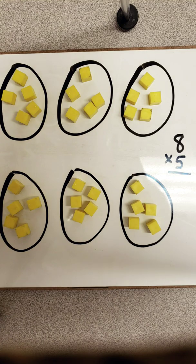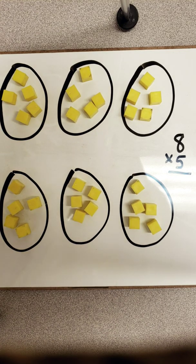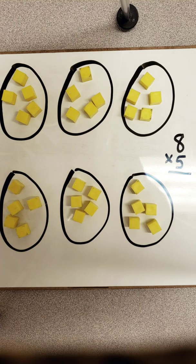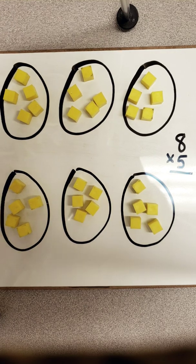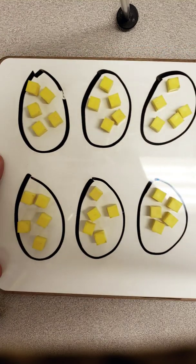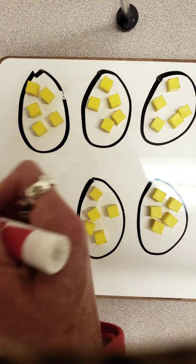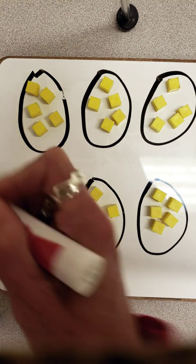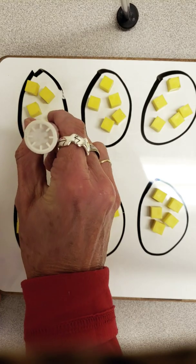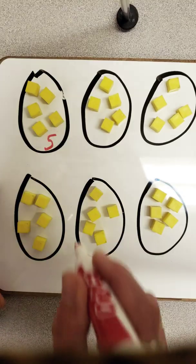Now, in order to figure out this multiplication problem, I'm going to have to count all of my groups — all the things inside my groups — in order to find out my total. So count with me. I have 1, 2, 3, 4, 5. And I'm going to put 5 right here just so that we know we've counted that.